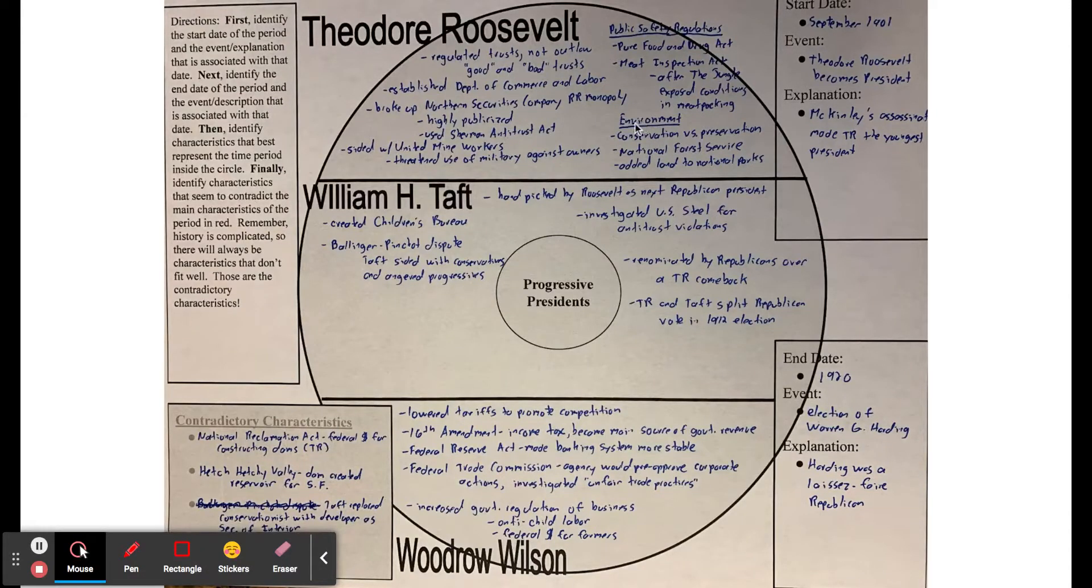He was also known as our first sort of environmental president. He was involved in the conservation and preservation movement. Those are two different types of environmentalism. Conservation was basically managing resources, allowing some forest to be cut down but being careful and strategic about it, whereas preservation was about doing less to the environment, leaving it alone so that nature's beauty could be enjoyed by people. Roosevelt was more in the conservation end of things but wasn't entirely unsympathetic to preservation.